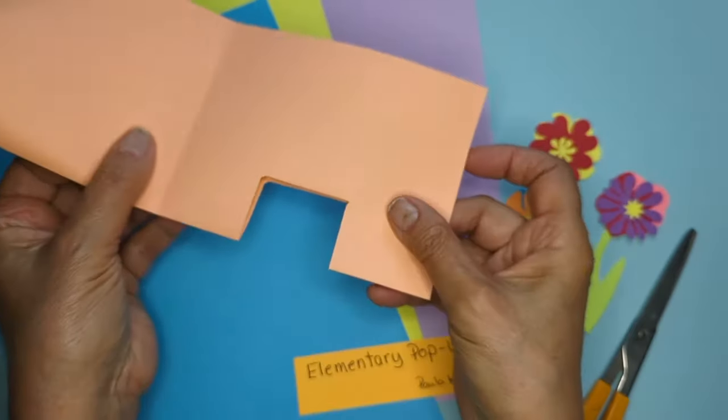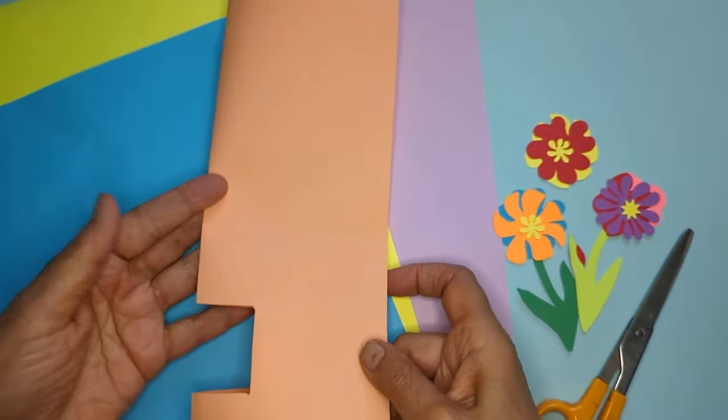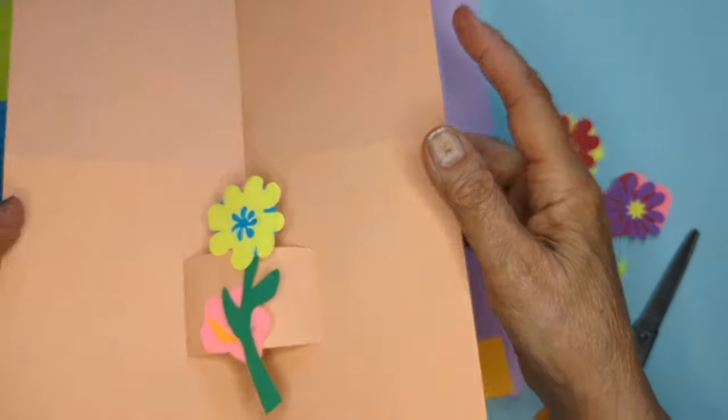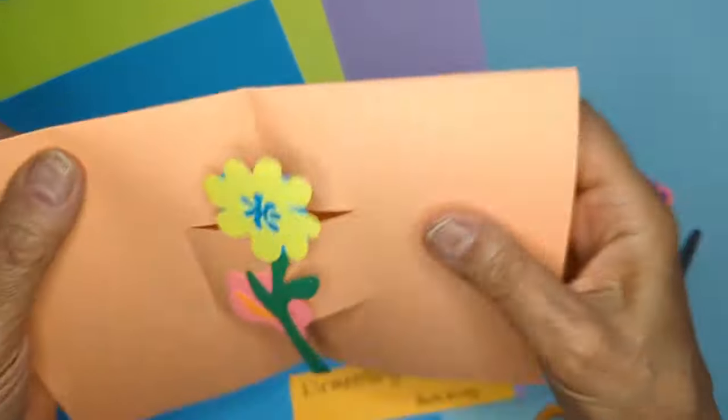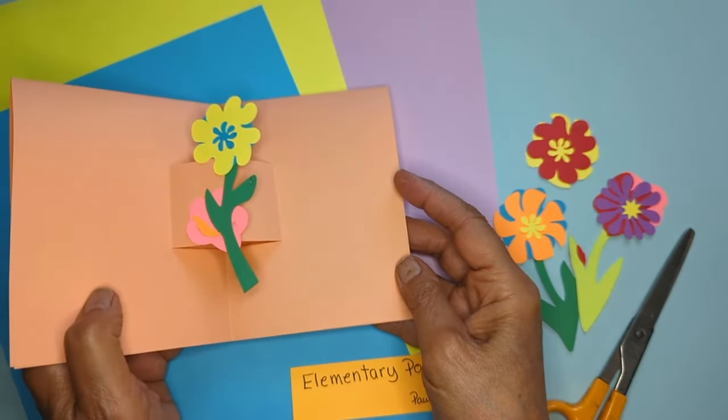Because otherwise when it's closed you see this part sticking out of the paper. So by using a full sheet of paper and folding it down in half like that, you can't tell the pop-up's inside and so it's a surprise.